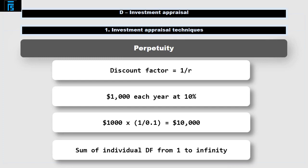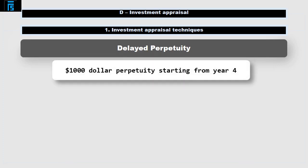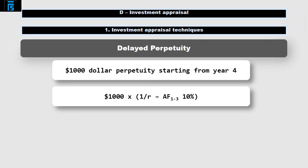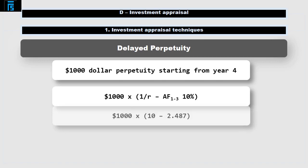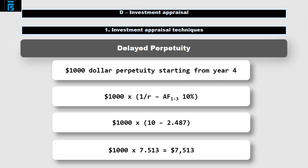Technically speaking, a perpetuity factor is the sum of the individual discount factors from 1 to infinity. It's useful to remember this if the perpetuity doesn't start immediately. If it doesn't start straight away, the approach we'd use will be similar to that for an annuity. For example, if our $1,000 perpetuity didn't start for 4 years, then the present value would be $1,000 multiplied by (1 over R minus the annuity factor for years 1 to 3 at 10%), or $1,000 multiplied by (10 minus 2.487), equals $1,000 times 7.513, equals $7,513.